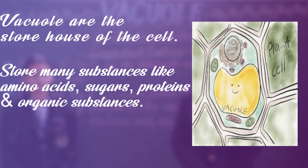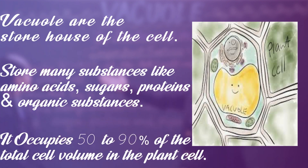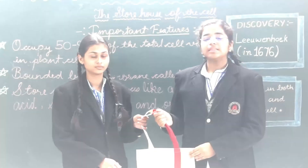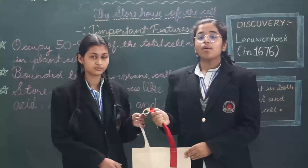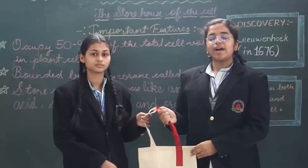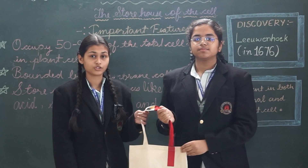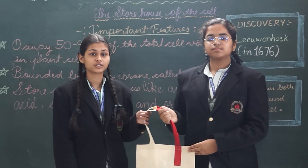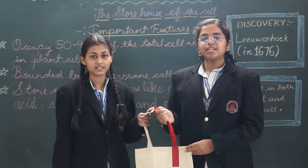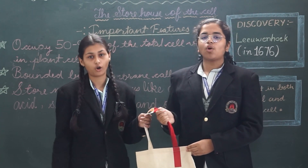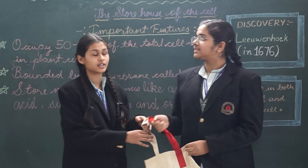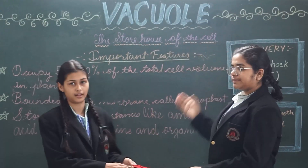That is why it is the largest cell organelle of a cell and it occupies 50 to 90% of the plant cell volume. Now, hope you all understood why a vacuole is compared with this storage bag — because it can store things like this bag. That is why it is also known as the storehouse of the cell.